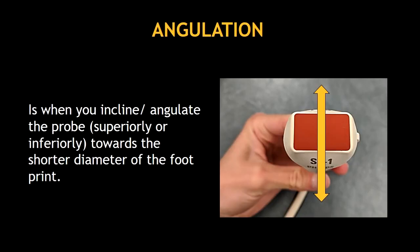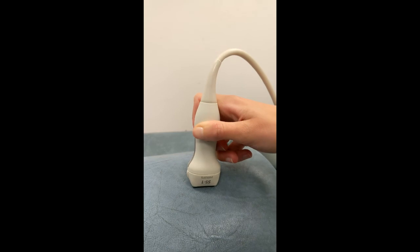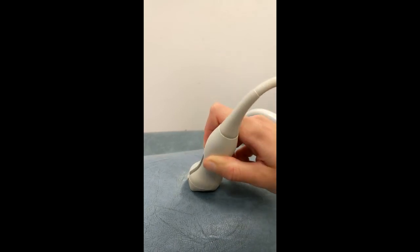Angulation is when you incline or angulate the probe towards the shorter diameter of the footprint. You can angulate the probe superiorly or inferiorly. In this video you can see how I'm angulating the probe.